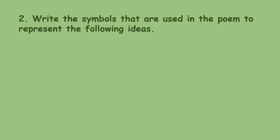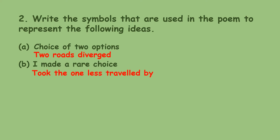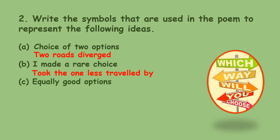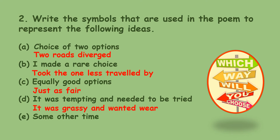In the previous video, I told you that 'The Road Not Taken' uses metaphor to compare the diverged or forked road to the dilemma we face when we have to make a choice. The poet also uses symbols: two diverged roads represent the choice of two options; taking the one less traveled by represents making a rare choice; 'just as fair' represents equally good options; 'grassy and wanted wear' means it was tempting and needed to be tried; and 'some other time for another day' suggests deferring the other option.